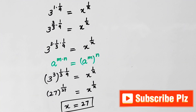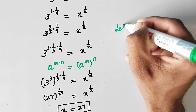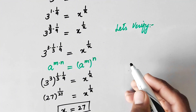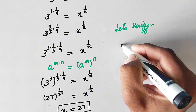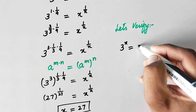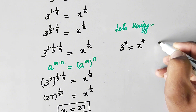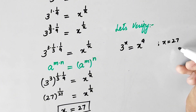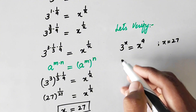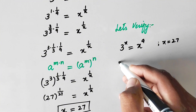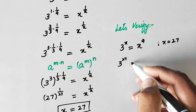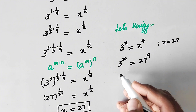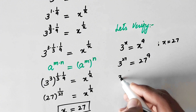Now let's verify our answer. Our original equation is 3 to the power x equals x to the power 9, and the value of x we found is 27. Substituting x equals 27, we get 3 to the power 27 equals 27 to the power 9.